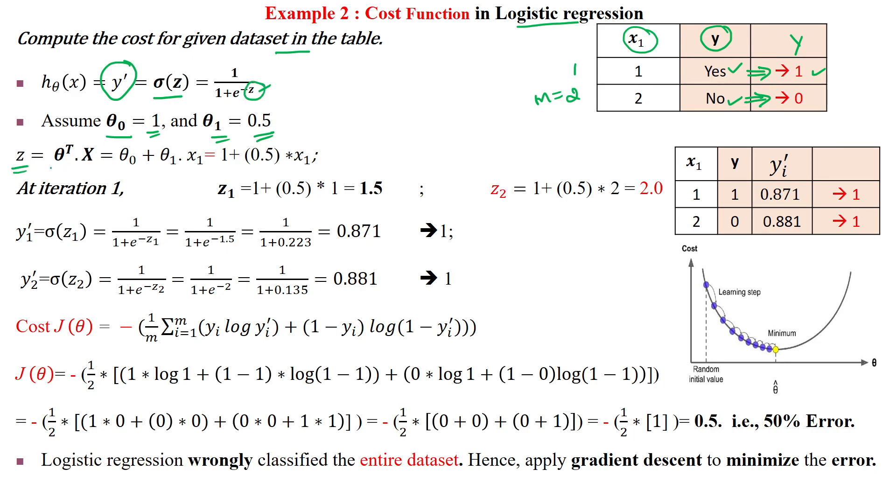g = θᵀx = θ₀ + θ₁x₁. Since we have only one feature, we stop at θ₁x₁. Then we substitute the theta values.